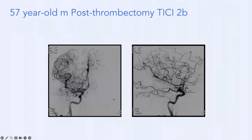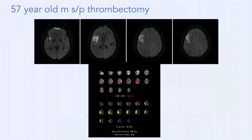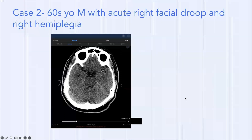They were taken to the angio lab and the right MCA occlusion was confirmed on AP and lateral views. An excellent TICI 2b thrombectomy result was achieved. The patient did very well — the area of infarct was limited to the right frontal operculum, exactly as predicted by CT perfusion, sparing all the areas further up.